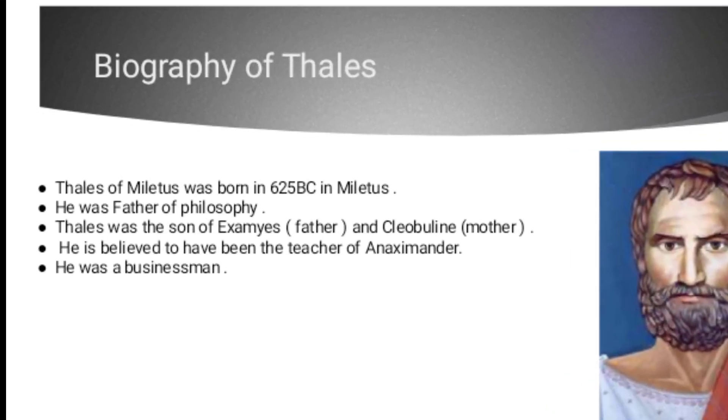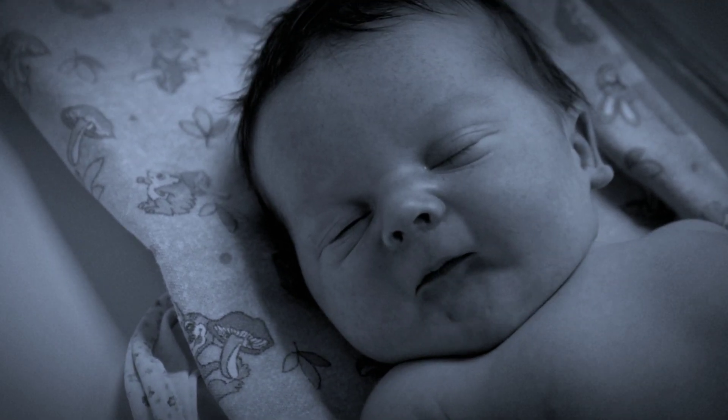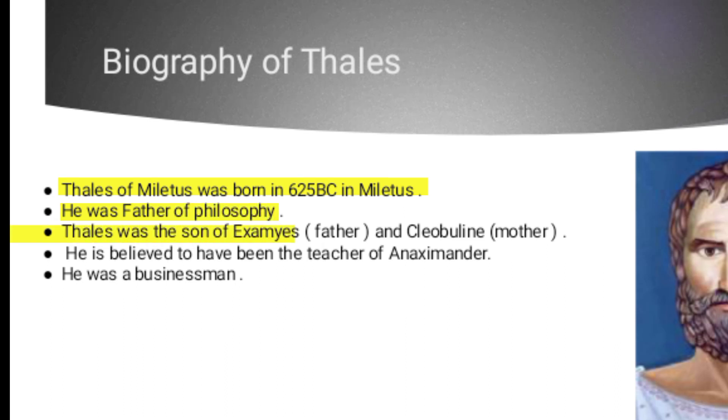Biography of Thales: Thales of Miletus was born in 625 BC in Miletus. He was the father of philosophy. Thales was the son of Examius and Cleobuline. He is believed to have been the teacher of Anaximander. He was a businessman.